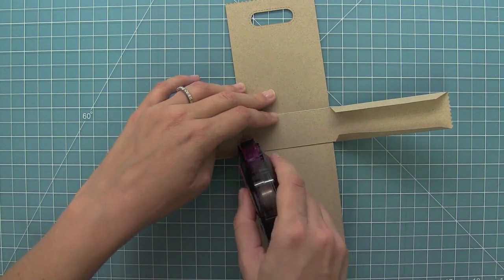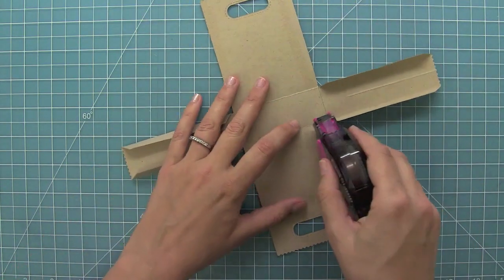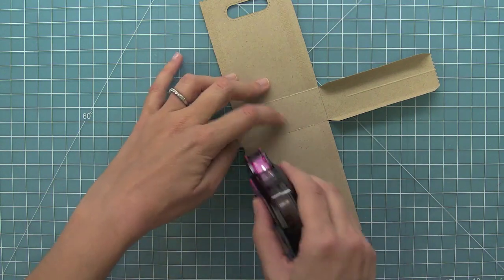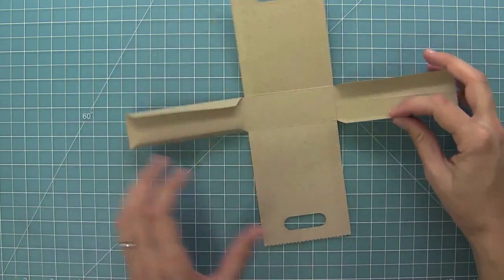Next you're going to add adhesive to the sides. You're going to do it to all four sides, all the way up the sides of the bag. So then we'll do the other side and now we're ready to assemble our bag.